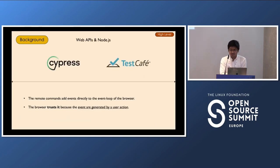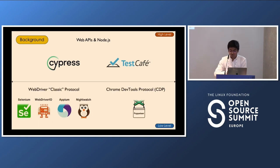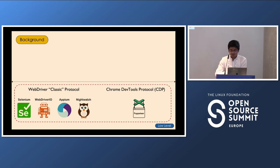Cypress and TestCafe leverage Web APIs and Node.js for high-level automation testing. At the low-level, we have two subsets: tools using the WebDriver Classic protocol and tools using CDP — the Chrome DevTools Protocol. I will take your focus to these two protocols, as they may help us find a solution to our original problem.